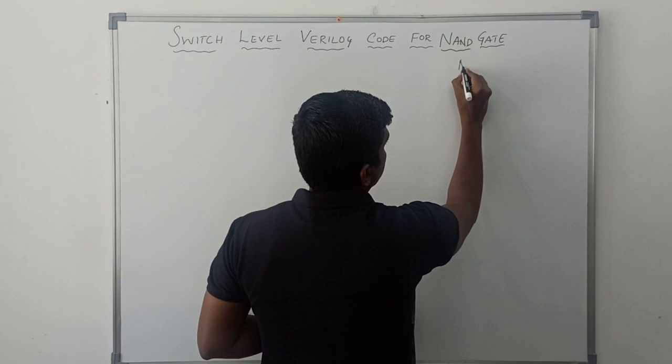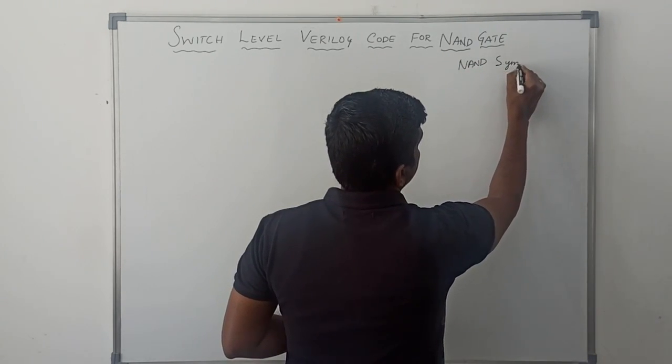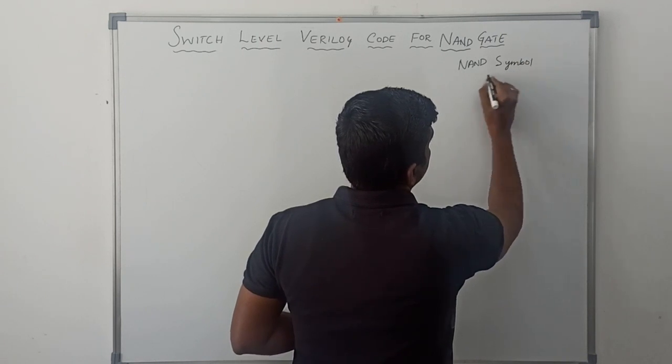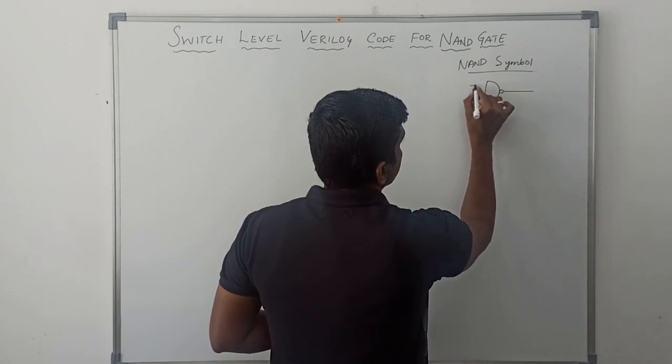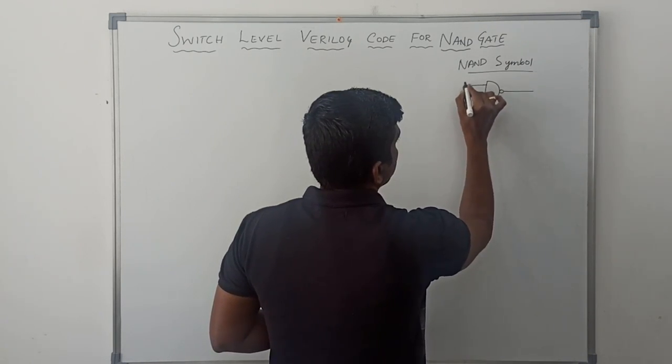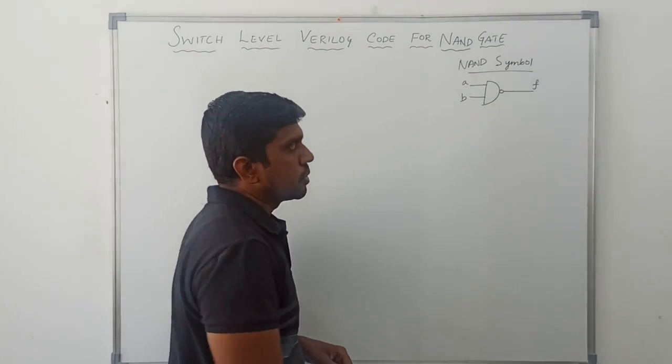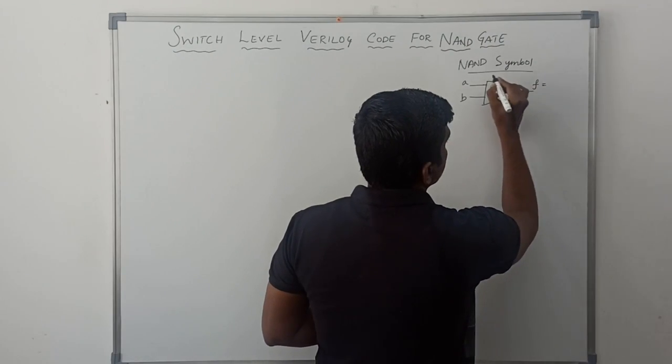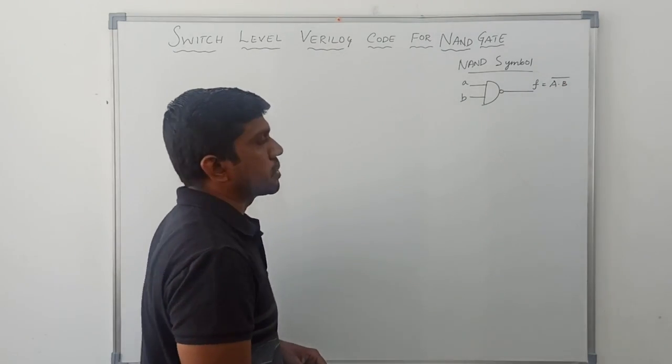First, I will draw the NAND gate symbol. It is a two input NAND gate. Inputs are A and B, output is F. The Boolean expression for NAND gate is A dot B, the whole bar. It is the Boolean expression.